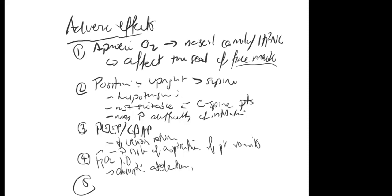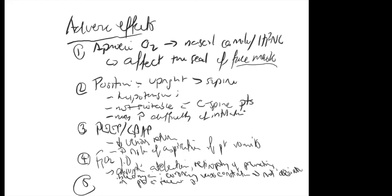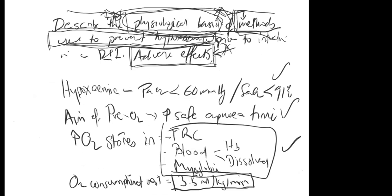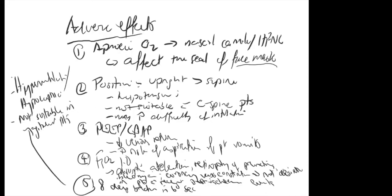Avoid 100% oxygen in neonates — you get retinopathy of prematurity. Also avoid in patients on bleomycin. There's also potential for coronary vasoconstriction, so avoid higher FiO2 in patients with recent ischemic events. For eight deep breaths in 60 seconds, adverse effects include hyperventilation and hypocapnia, and it's not suitable for agitated patients.